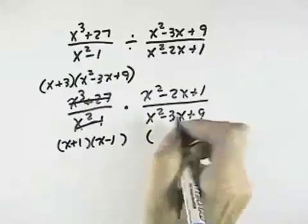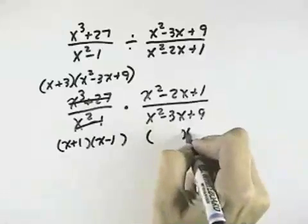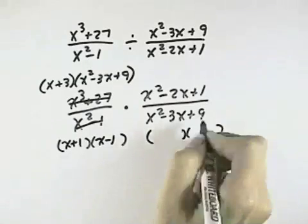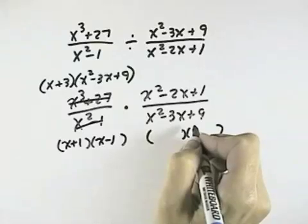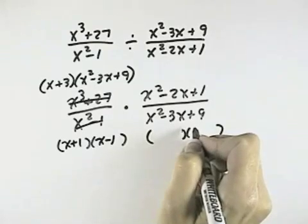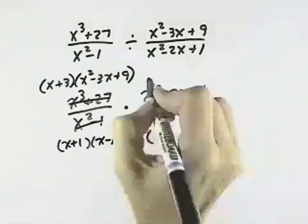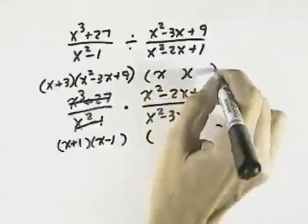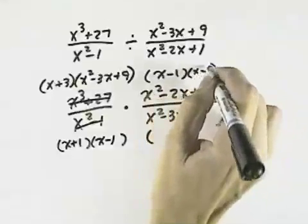Here we'll have, for the denominator, we can factor this out. Actually, I don't see any factors of 9 that are going to work to factor that one. So let's factor this numerator first. We can always come back to that one. That would be x minus 1 and x minus 1.